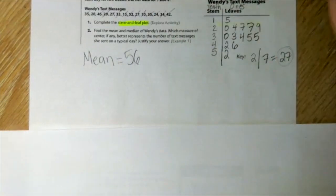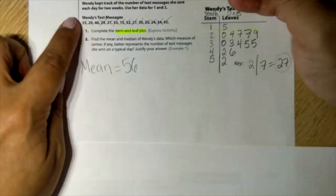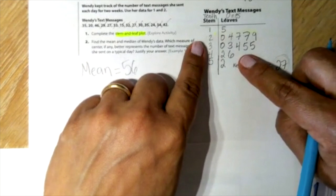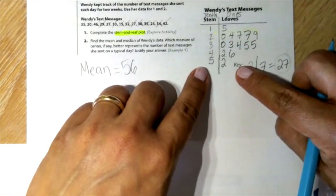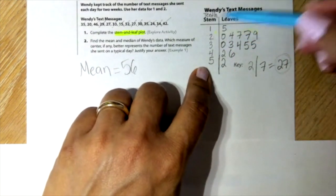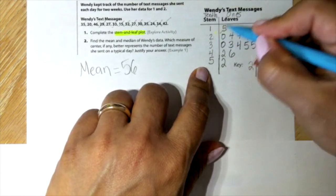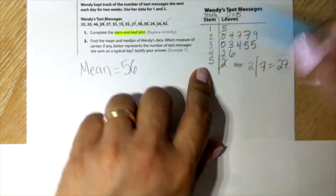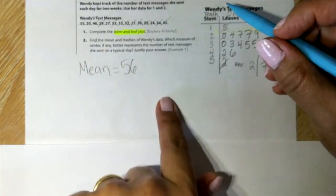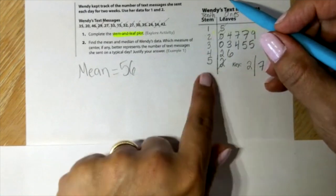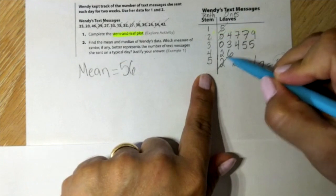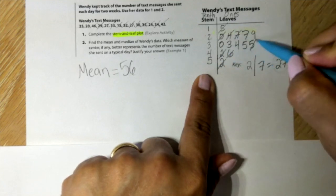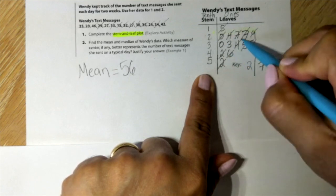The median is the number in the middle. There's two ways of doing it. You can either rewrite these data in order from least to greatest or using the stem and leaf. These are already in order, least is 15, greatest is 52. So the median is the number in the middle. Cross them out, one from the top, one from the bottom.